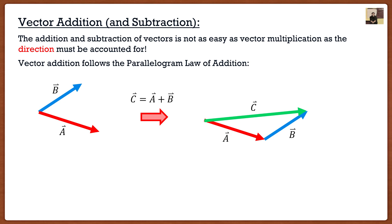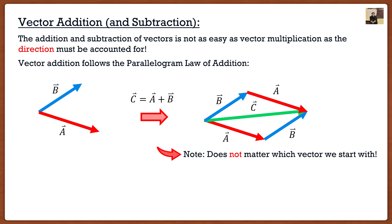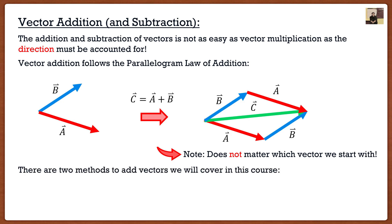You might think that's not a parallelogram — that's a triangle. You're right! So why is it called the parallelogram method? If we start with vector A and then go to B that forms a triangle, but if we start with vector B first and then move on to vector A, you can see that we actually create a parallelogram. The key takeaway is it does not matter which vector you start with — you can start with whichever you're most comfortable with.